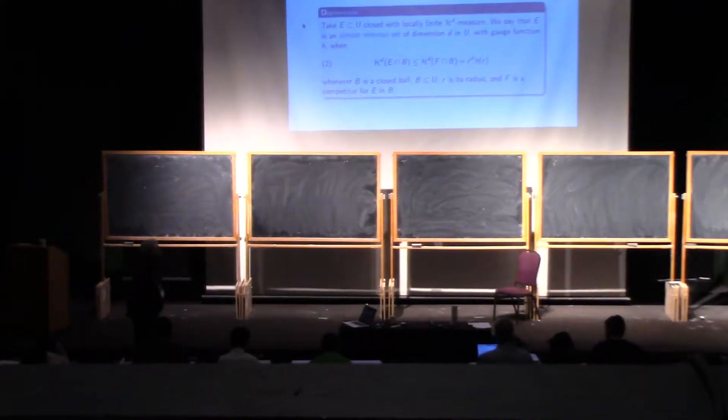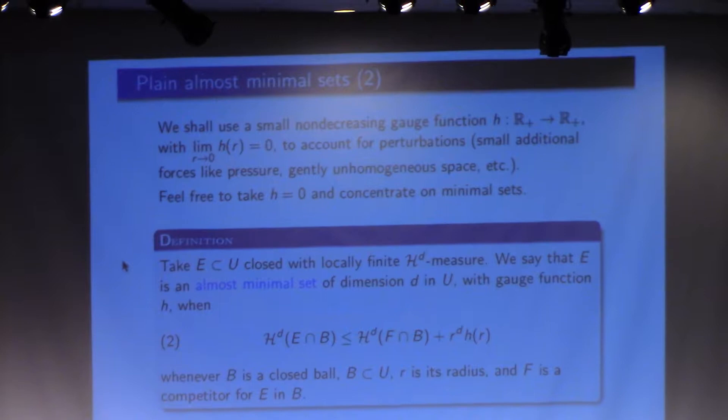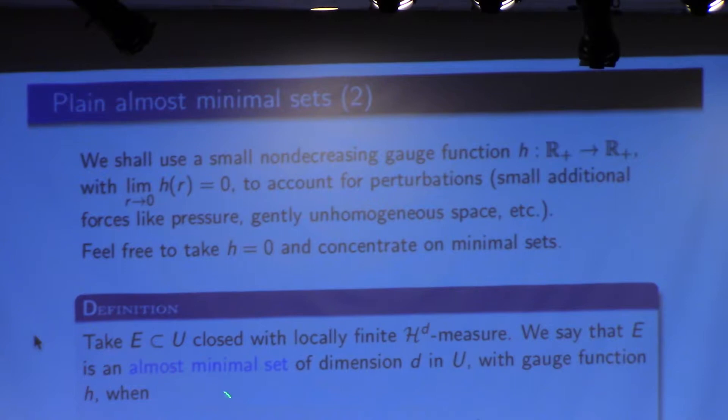Starting more or less where I left off: we're interested in almost minimal sets. Almost minimal sets are defined as follows. The set is always called E, and a competitor would be F. F would be a competitor in a ball, and the main property is that the Hausdorff measure of the set in the ball cannot be much larger than the Hausdorff measure of any competitor.